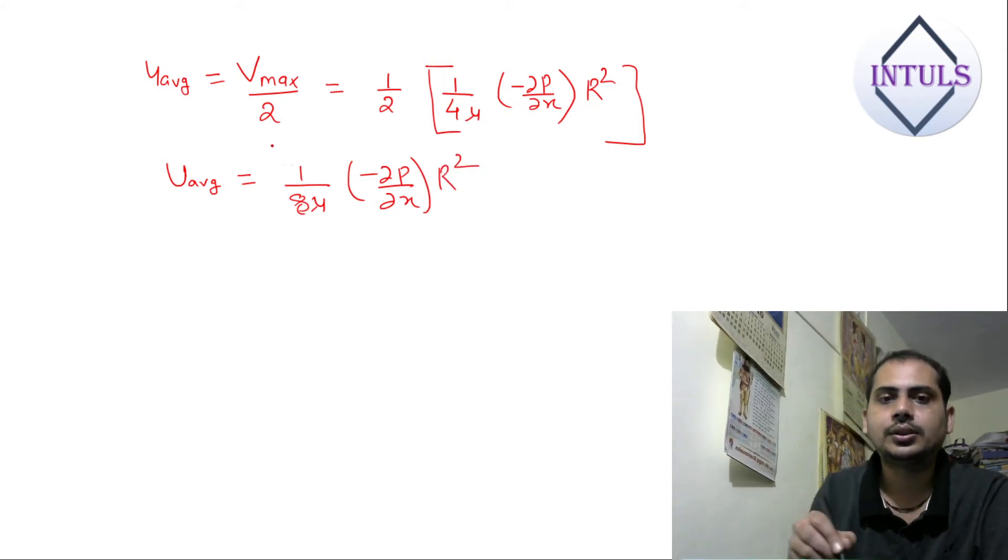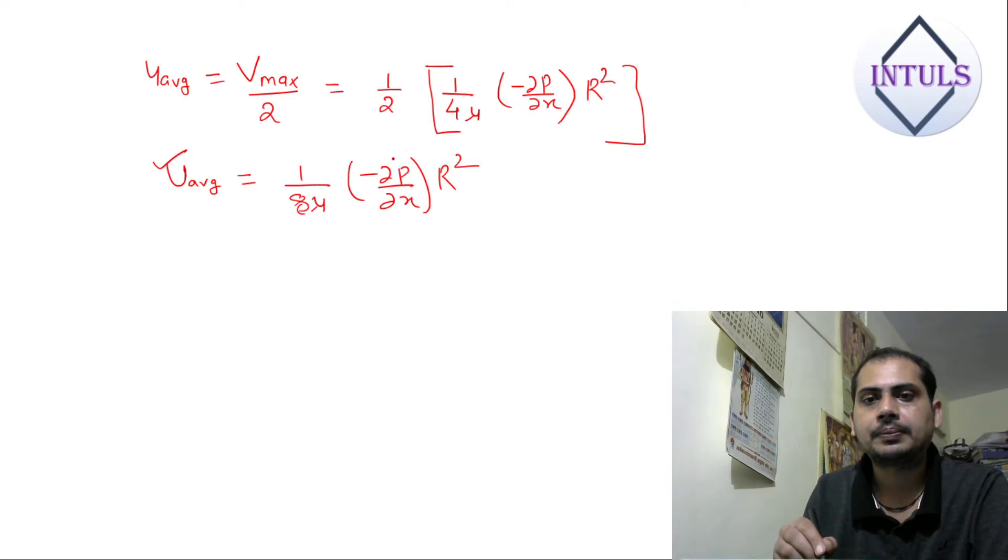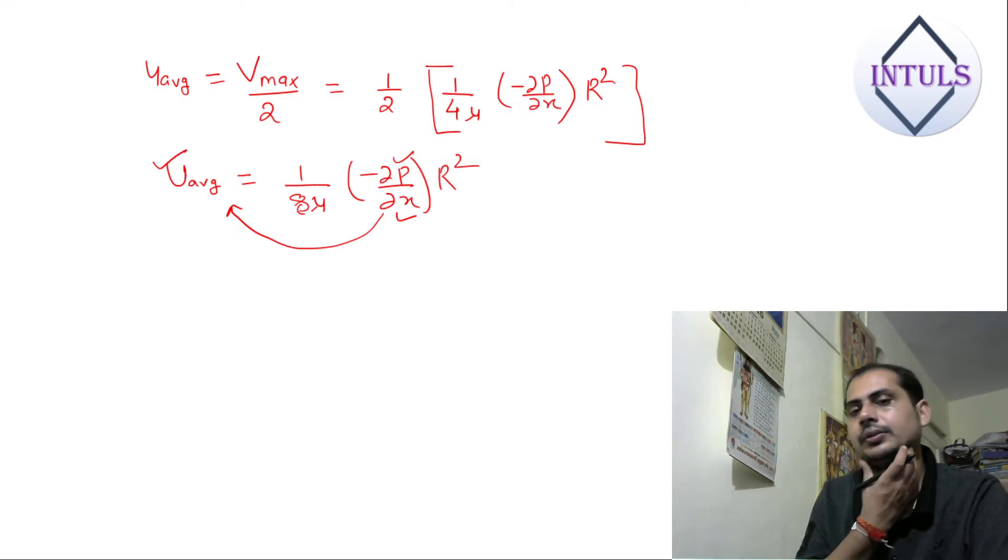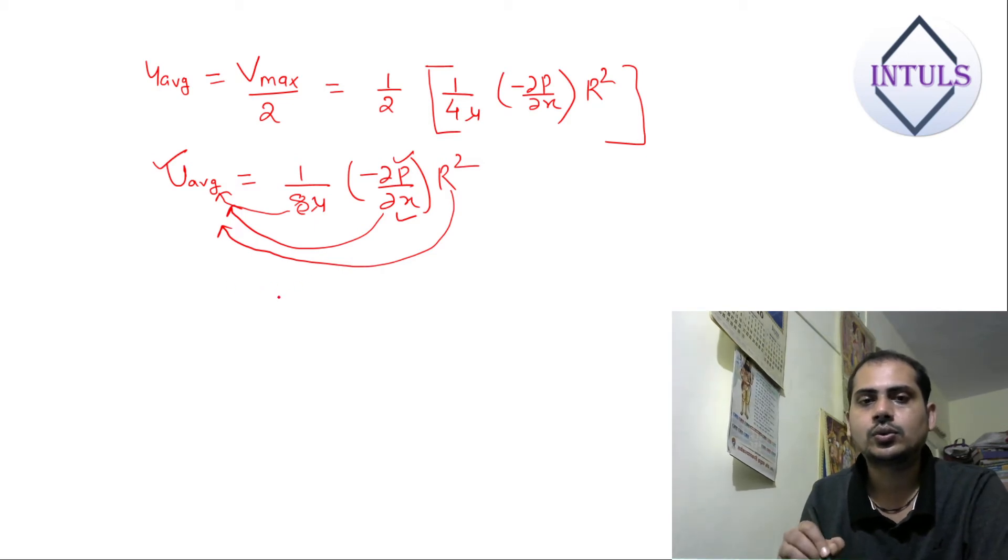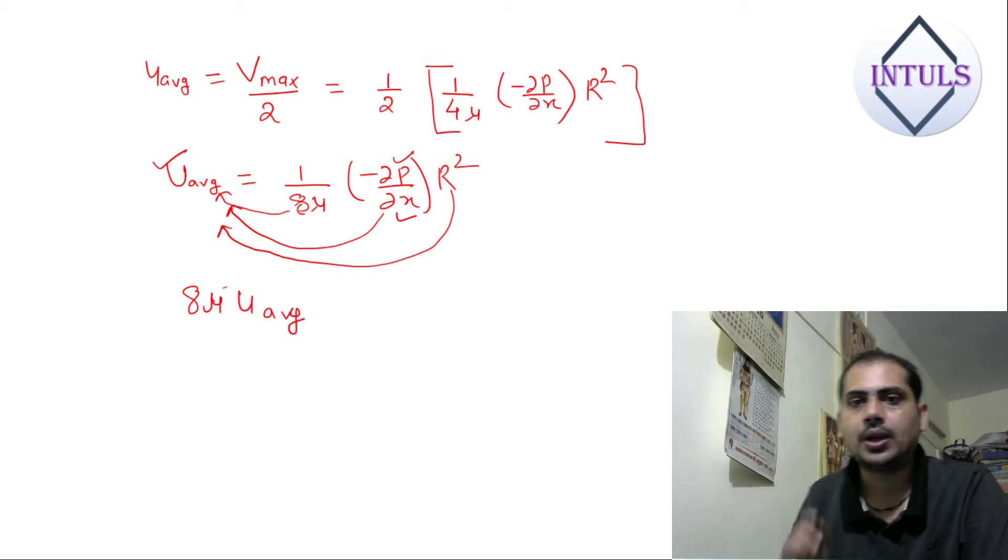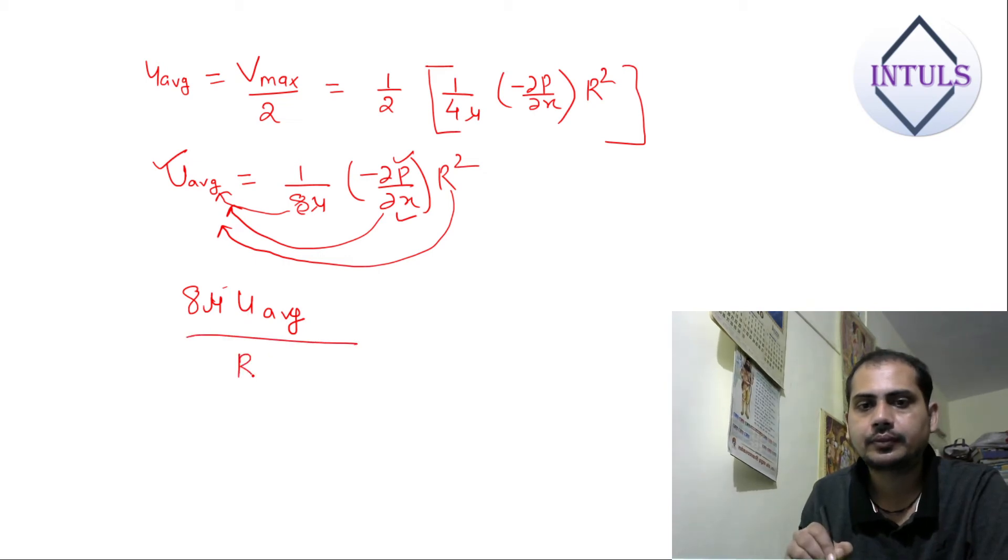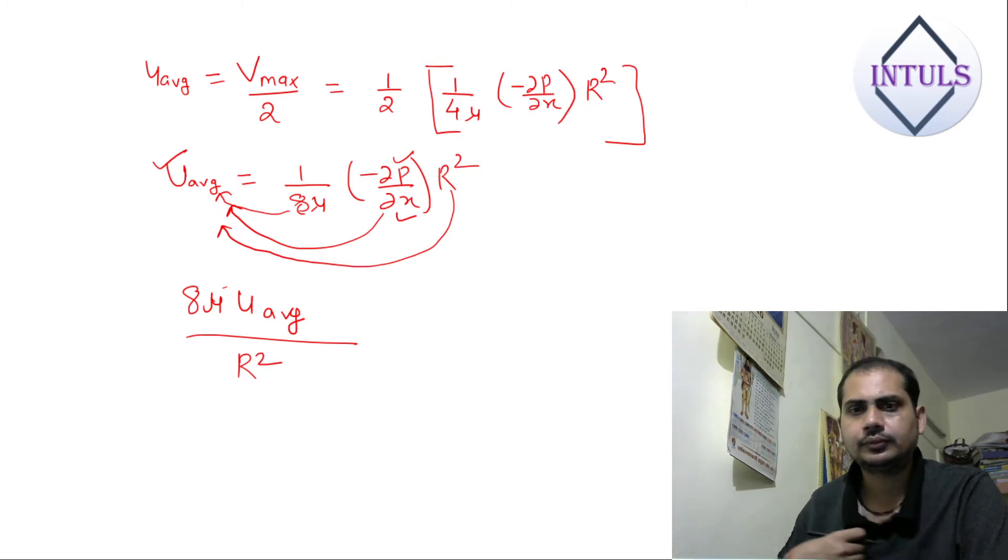Tell me one thing. This u_average is constant, so we can integrate P and X individually. Is it correct? So what I will do, I will take this DX to this side and integrate it. I will take all the terms to this side except P and integrate this.